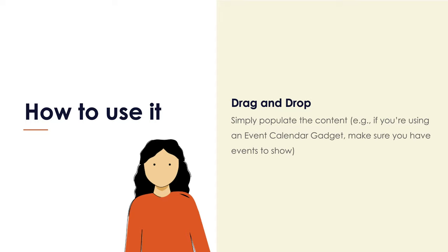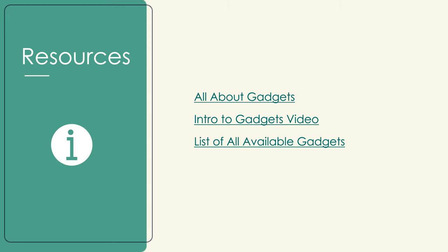As you can see, working with Wild Apricot's website builder is really just a matter of dragging and dropping different gadgets onto the page, exploring the settings, and making sure you've set up all the backend stuff — like your events and memberships — so it'll all flow through to the gadget dynamically, taking a lot of work off your shoulders. Here are some helpful resources: everything you need to know about gadgets, an introduction to gadgets video, and a list of all available gadgets Wild Apricot offers, with links to more detail on any gadget.